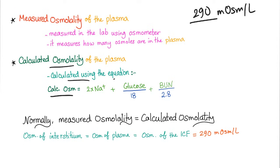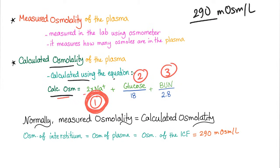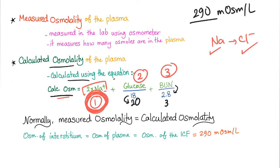Calculated osmolality depends on what we call the big three: sodium, glucose, and blood urea nitrogen. The biggest of the three is sodium. Why two times sodium? Because sodium is always combining with something else, like chloride — one for sodium and one for chloride, so we multiply by two. The formula is: 2 × sodium + glucose/18 (approximately glucose/20) + BUN/2.8 (approximately BUN/3).